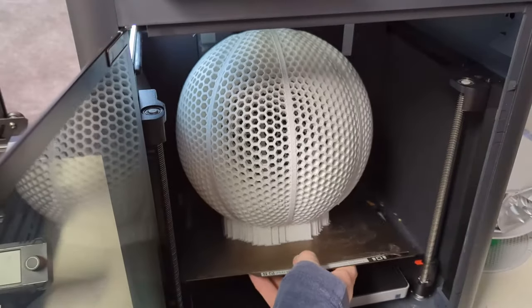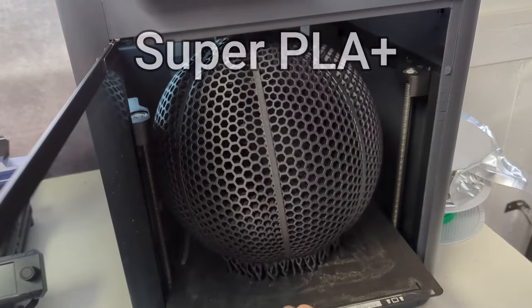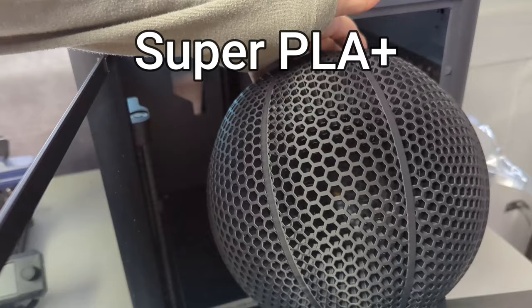I started by printing the Flex PLA in white and then I printed the Super PLA Plus in black. The print settings I used to print these balls are in the description if you're interested.